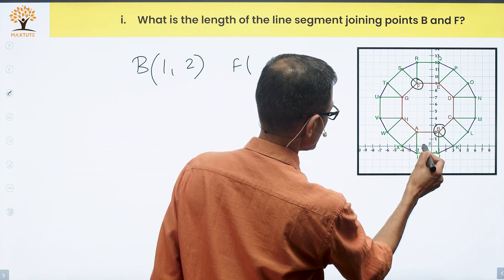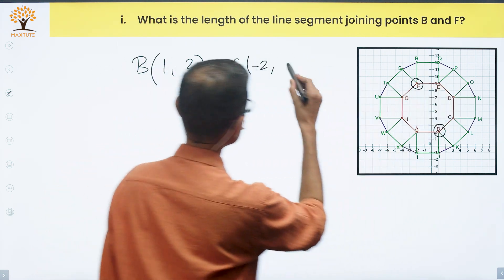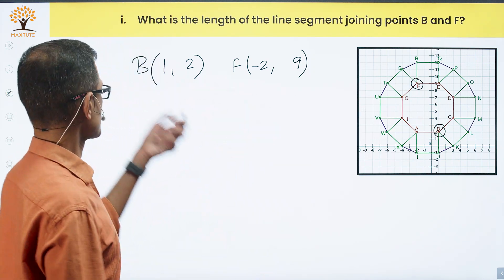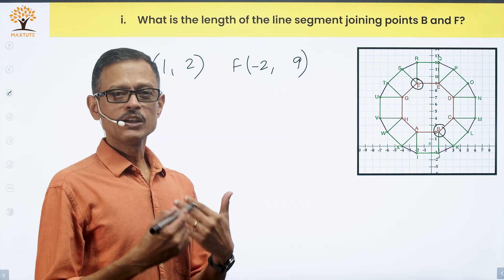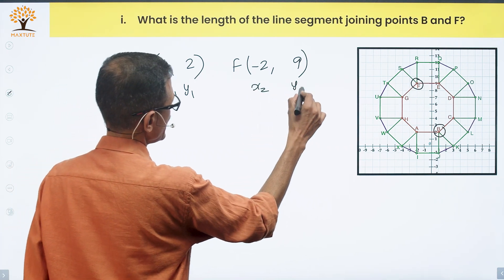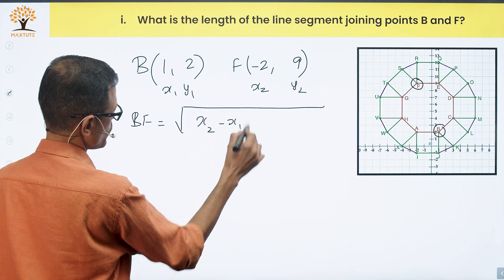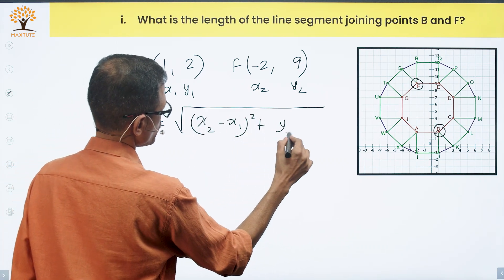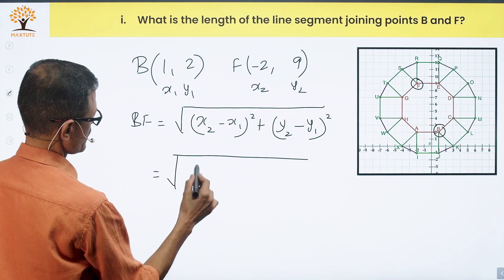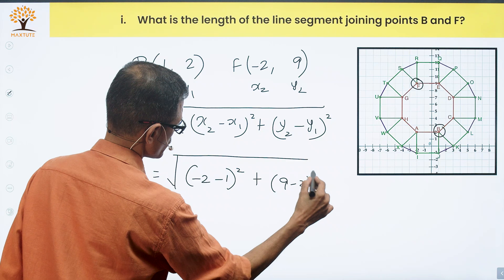We'll have to find the coordinates of point F. This is zero, minus one, minus two. This is where F is on the x-axis, minus 2, comma, and on the y-coordinate equals 9. So we need to find the length of the line segment joining points whose coordinates are 1, 2 and minus 2, 9. If this is x1, y1, x2, y2, then BF equals square root of (x2 minus x1) whole square plus (y2 minus y1) whole square.